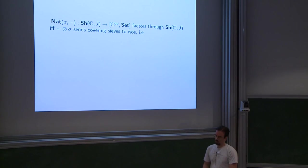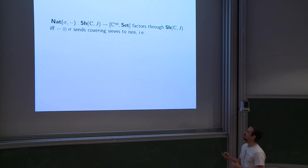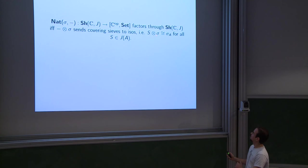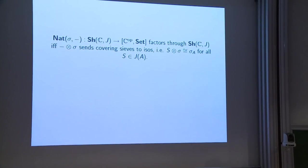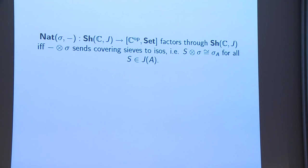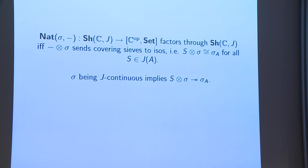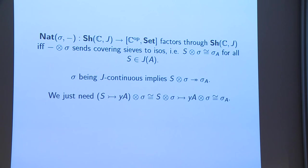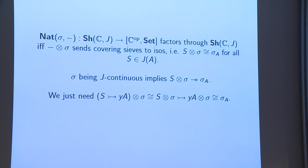What you need is that for this functor to factor through sheaves, its left adjoint must send covering sieves to isomorphisms. So when you tensor with sigma you need that for all sieves in j, tensoring sends them to isos. Being j-continuous says it's an epi, and now we just need this morphism to also be a mono — we need that tensoring with monos gives back a mono. I have three conditions for preservation of monos by this functor; I'll go into one of them.